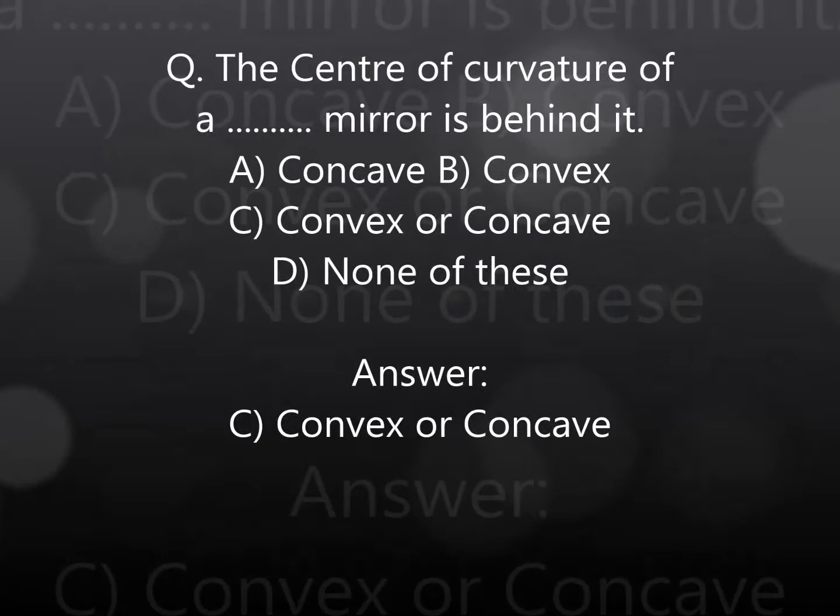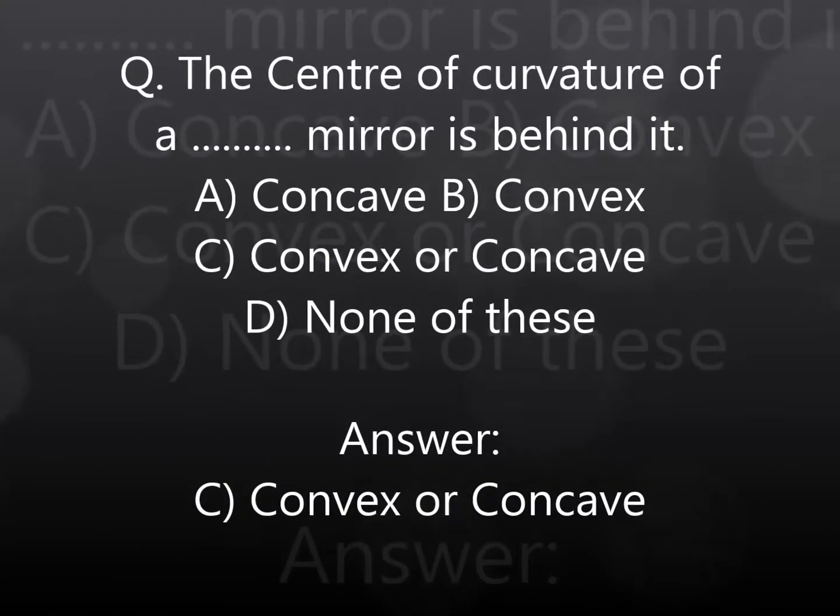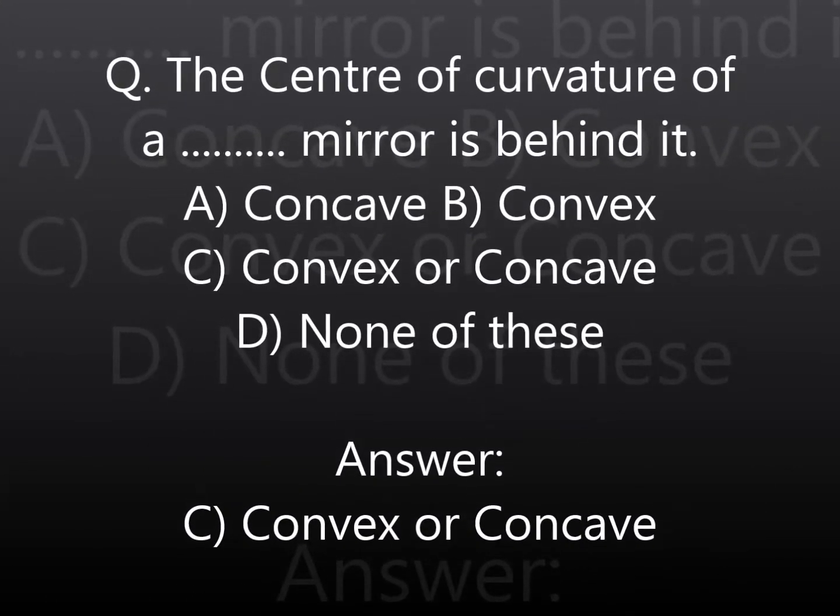The center of curvature of a mirror is behind it: A. Concave, B. Convex, C. Convex or Concave, D. None of these. Answer: C. Convex or Concave.